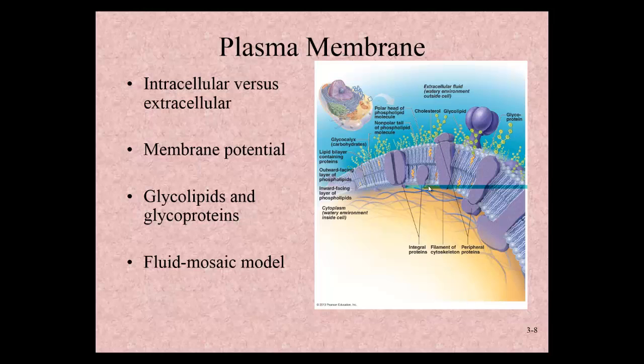So we have this plasma membrane that substances need to pass through, but only certain things can pass through. We say again that it's selectively permeable.